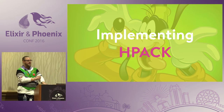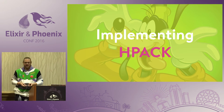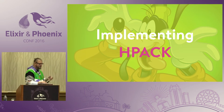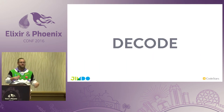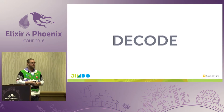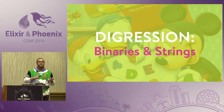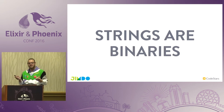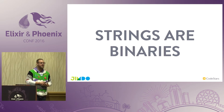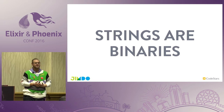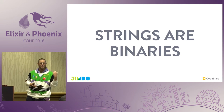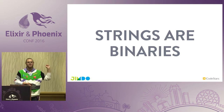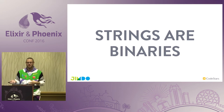Now that we have the context set, let's look at decoding the header block fragment. Before we do that, there's one crucial basic: binaries and strings. A string in Elixir is a UTF-8 encoded binary. I saw there's an entire talk about this at the conference. We'll go through it quickly — with that statement, there's enough content to make my point in the next slide.